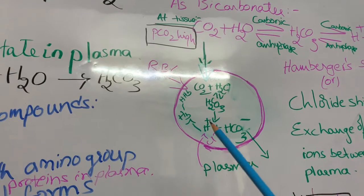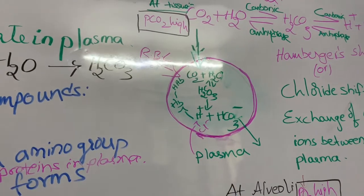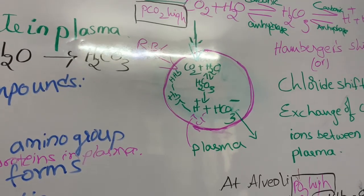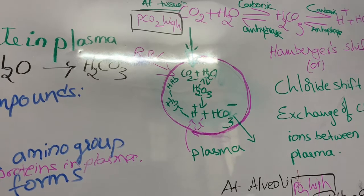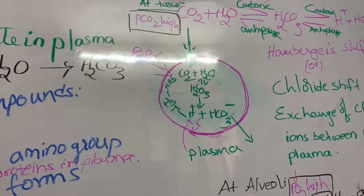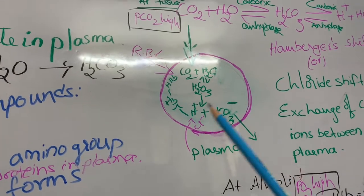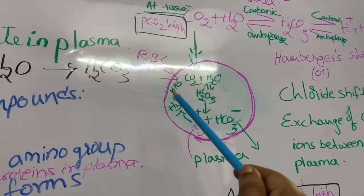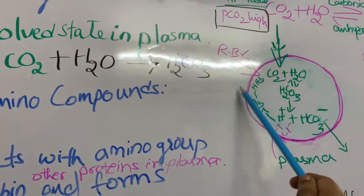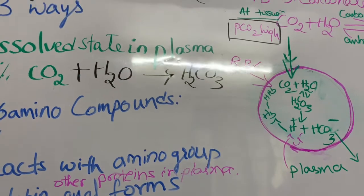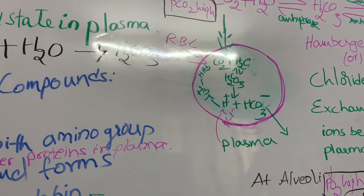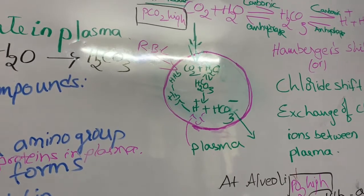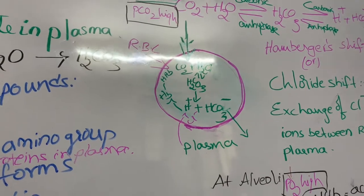These reactions require one enzyme: carbonic anhydrase. If H⁺ ions were free, the pH value would decrease and the medium would become acidic. However, blood maintains a pH of 7.4. To maintain this pH, hemoglobin combines with the hydrogen ions and forms acid hemoglobin (HHb), acting as a buffer.